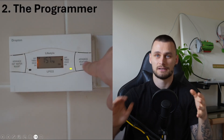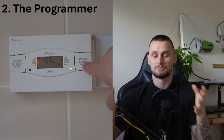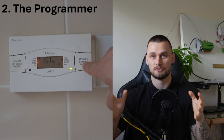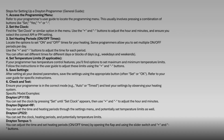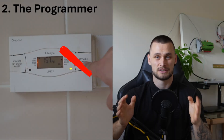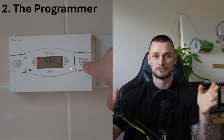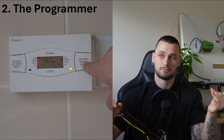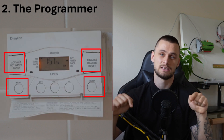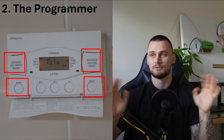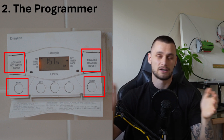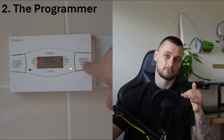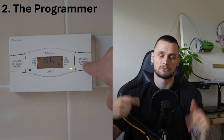The next issue is the programmer. There are a couple of problems — first, they're not super easy to set. Yes, there are only a few buttons and a manual, but it usually takes a long time and most people never touch them. They're already preset by whoever installed the system, and what ends up happening is people just manually press the buttons to switch heating or hot water on and off, then manually switch it off again — so it's more of a hindrance than anything useful.